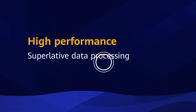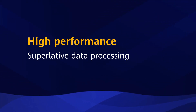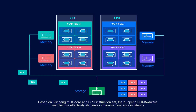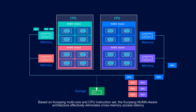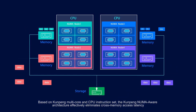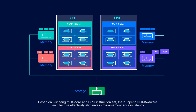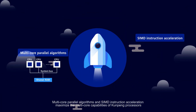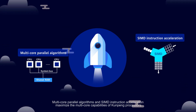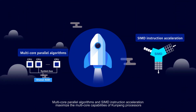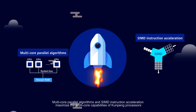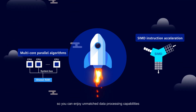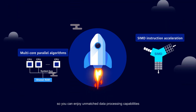High performance, superlative data processing. Based on Kunpeng multi-core and CPU instruction set, the Kunpeng NUMA-Aware architecture effectively eliminates cross-memory access latency. Multi-core parallel algorithms and SIMD instruction acceleration maximize the multi-core capabilities of Kunpeng processors, so you can enjoy unmatched data processing capabilities.